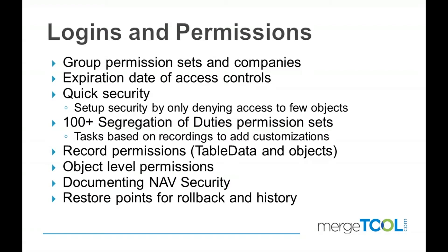Quick security is what I'm going to concentrate on today. By simply denying access to certain things, we allow setup very quickly — and this includes both data and objects. We have also created more than 100 permission sets specially designed for segregation of duties, and they work across many versions of NAV, from 2009 to the latest Business Central. Using these will make an upgrade a lot smoother. If you redesign your security using our permission sets and quick security, you can get very far in a very short time when you upgrade.